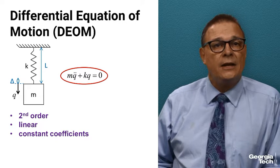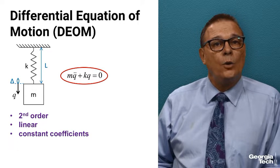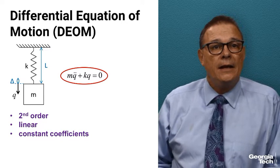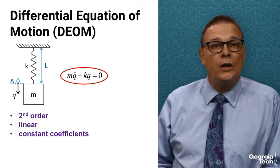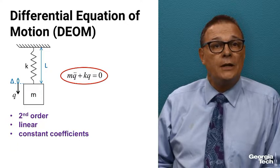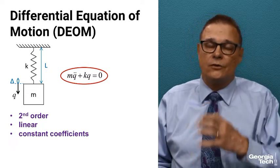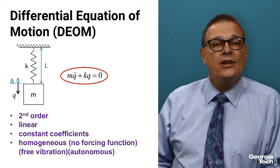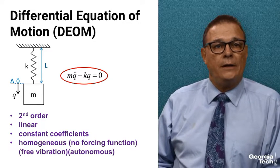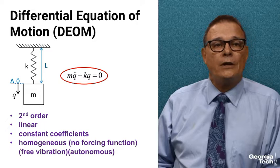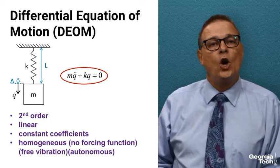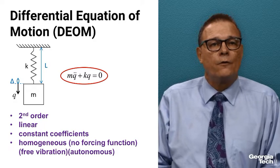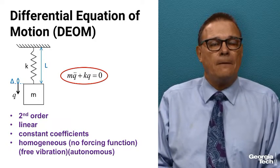It has constant coefficients because we said mass and the spring constant are not going to change with time. It's an ordinary differential equation instead of a partial differential equation because it's got lumped characteristics, so it's just a single degree of freedom system. It's also homogeneous at this point - it's free vibrations, we don't have any forcing function. We also call that autonomous, so homogeneous, no forcing function, free vibration, or autonomous mean the same thing.